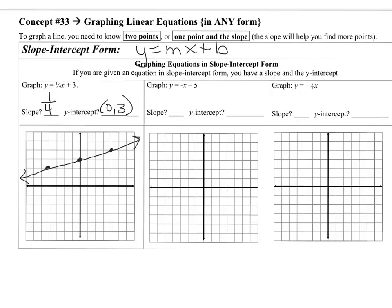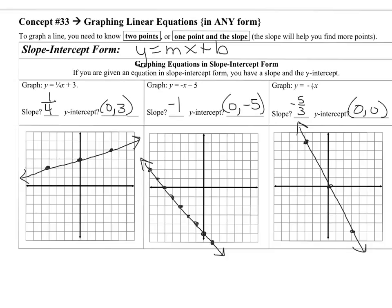Stop the video and do the next two. Here are your answers. Quick reminder that when you have a positive slope, positive slopes go from low to high when reading from left to right. Negative slopes go from high to low — they go down if you're reading from left to right when you have a negative slope. Pay really close attention to that.